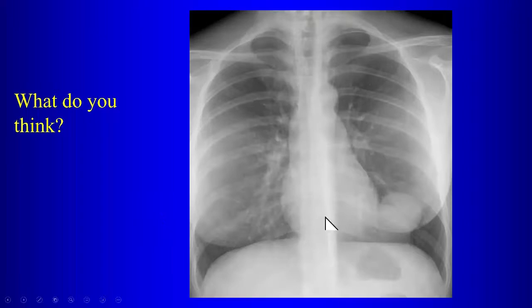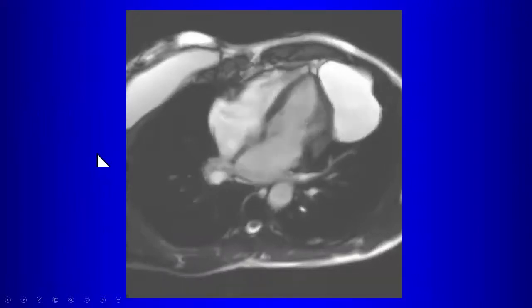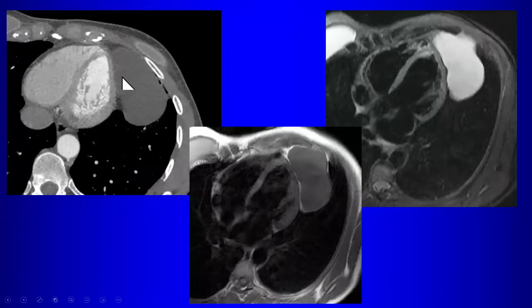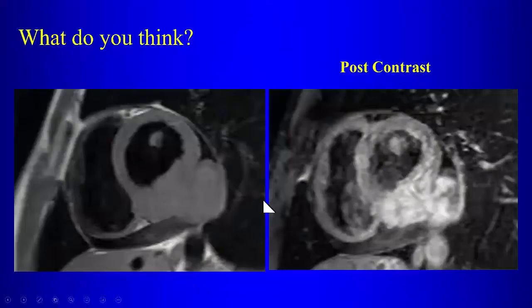A large round mass adjacent to the heart in the cardiophrenic angle represents a pericardial cyst. These are fluid attenuation on CT, very bright on T2-weighted MR, and do not communicate with the pericardial space. They are more common in the right cardiophrenic angle.